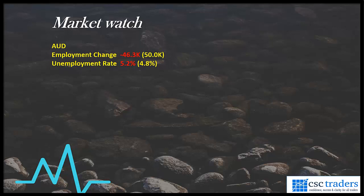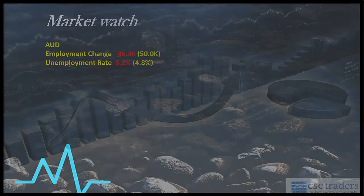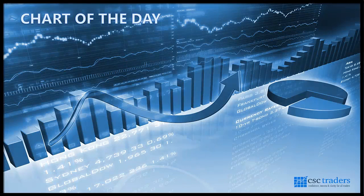The forecast was 4.8, so both of those data points were negative yesterday, resulting in the Aussie dollar losing ground against the US dollar and other majors. That was pretty much all that happened yesterday, so let's move along and have a look at our chart of the day.